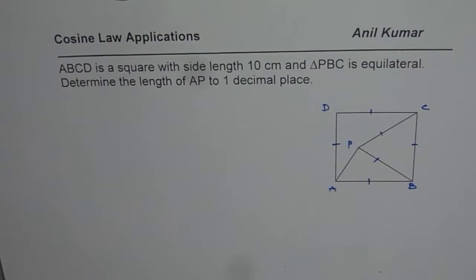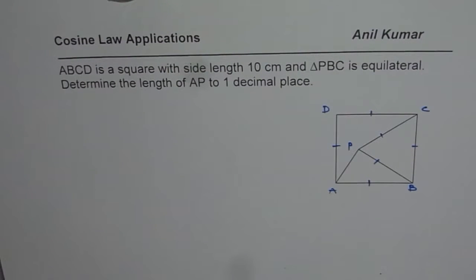I'm Anil Kumar and here is a test problem for you on cosine law application. ABCD is a square with side length 10 cm and triangle PBC is equilateral.